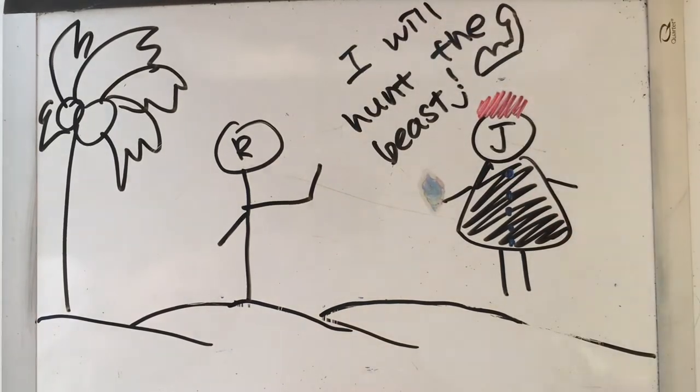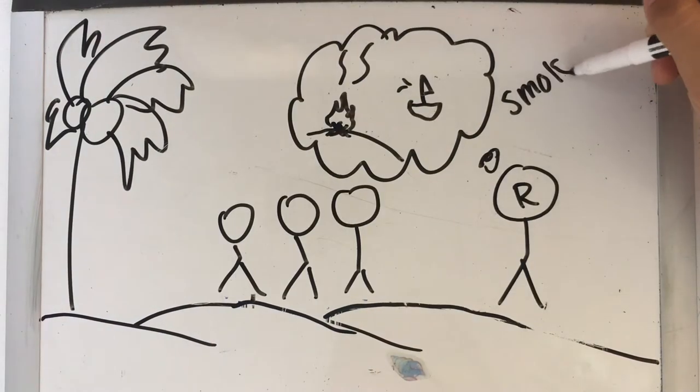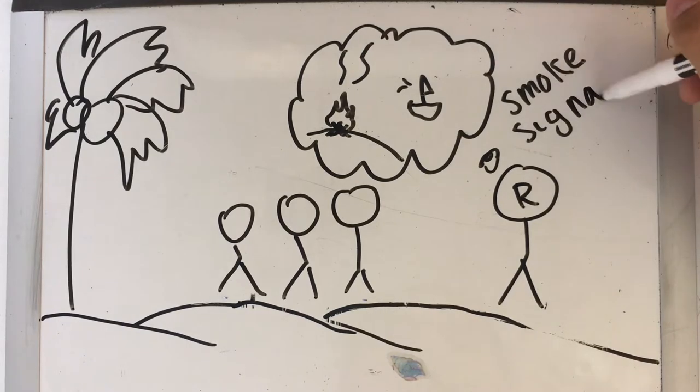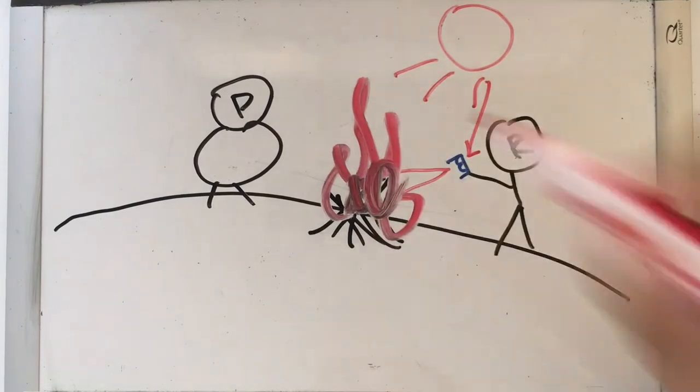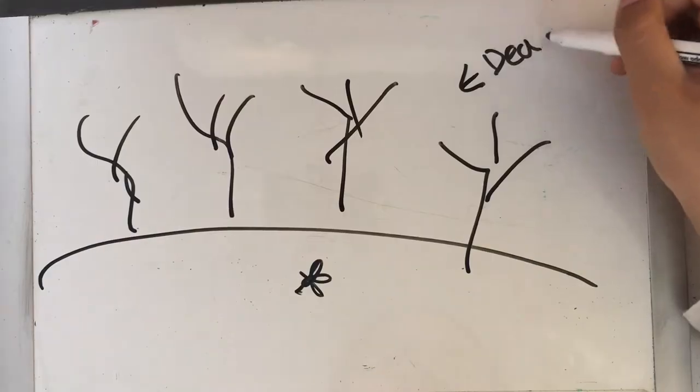Ralph states that they have to make a fire on the mountain to produce smoke, so if ships pass, they will see the smoke and rescue the boys. He later uses Piggy's glasses to light it, but the fire goes out of control and ruins a part of the forest.